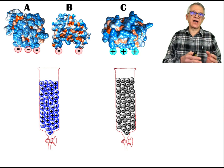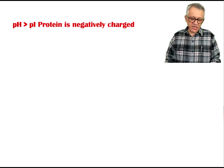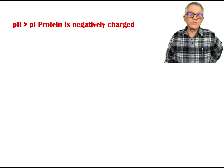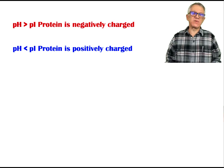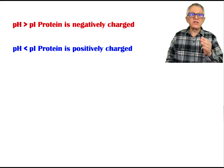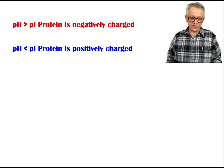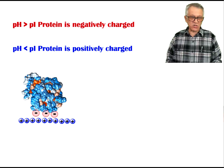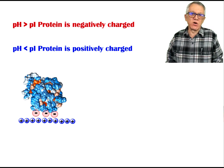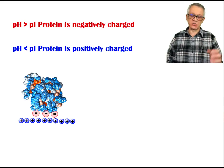Whether your protein is positively or negatively charged depends on the pH of the buffer. If the pH is above the pI of the protein, then the protein is going to be negatively charged. By contrast, if the pH is below the pI of the protein, the protein is going to be positively charged. So you can manipulate the pH of the buffer and select the stationary phase according to your knowledge of the pI of the protein. A negatively charged protein requires a positively charged stationary phase, and a positively charged protein requires a negatively charged stationary phase in order for them to bind.